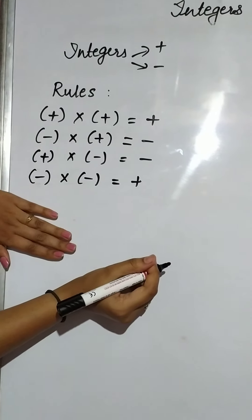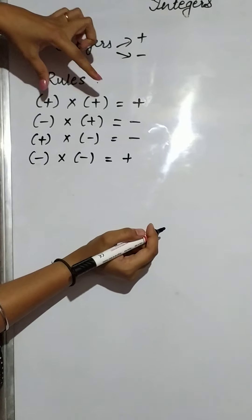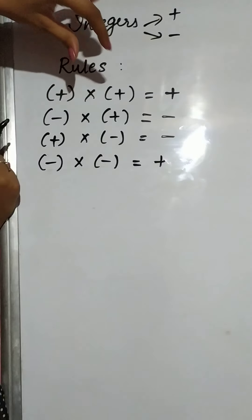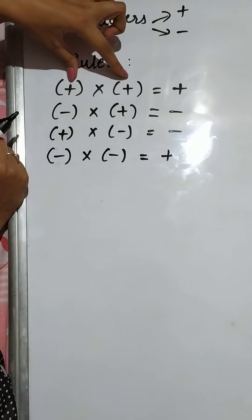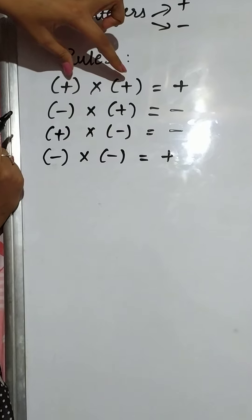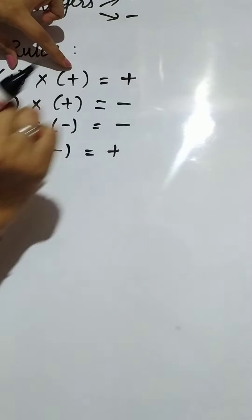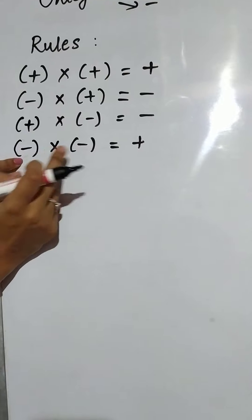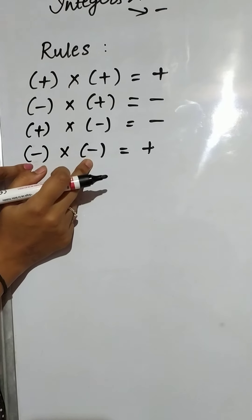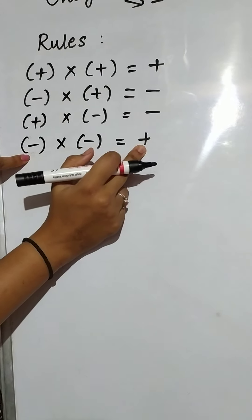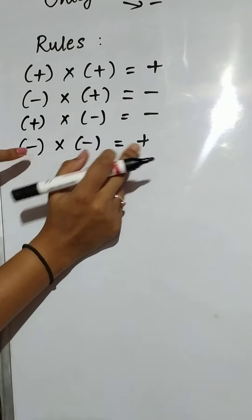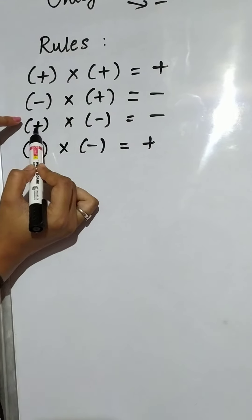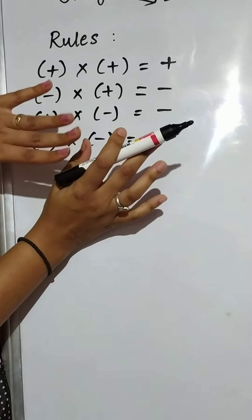The trick to remember this is: when both the signs are similar — like positive and positive, or plus and plus — it gives a positive product. Same with minus and minus; both signs are similar, so it gives a positive product. And one positive with one negative will give a negative product.